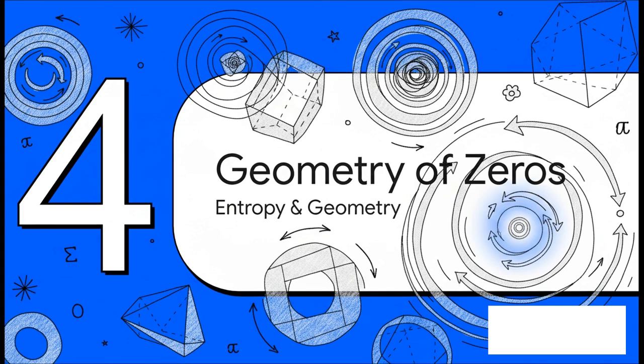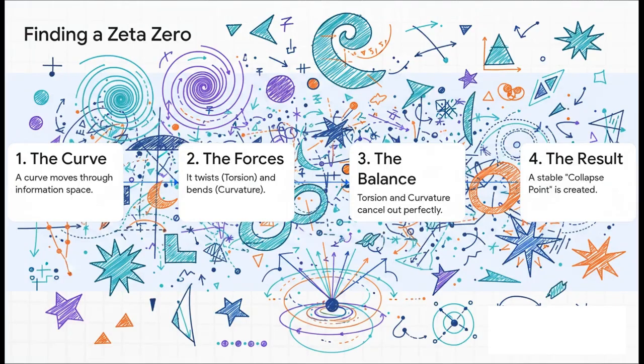Okay, so we have these three concepts: entropy, curvature, and torsion. How in the world do they come together to actually find zeros of the zeta function? Well, this is where it gets really cool.